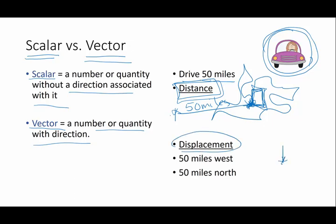If I say drive a displacement of 50 miles west, if you start right here and you go 50 miles straight west, you are going to be exactly 50 miles to the west of the place that you start. If I say drive 50 miles north from your starting position, you're going to go 50 miles north of where you begin.